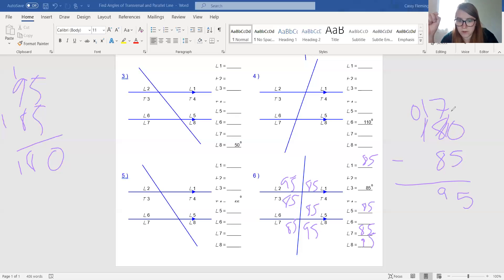And then we just have to fill in 4 and 6. Again, we know that that has to add up to 180. So 4 would be 95. Alternate interior angle would be 6. So that also has to be 95.